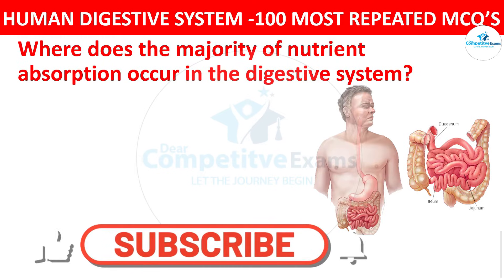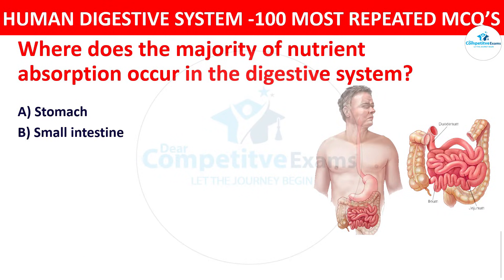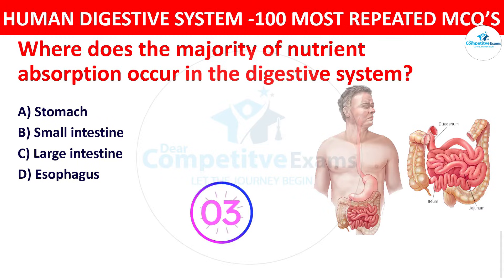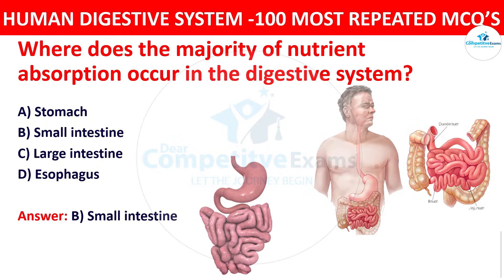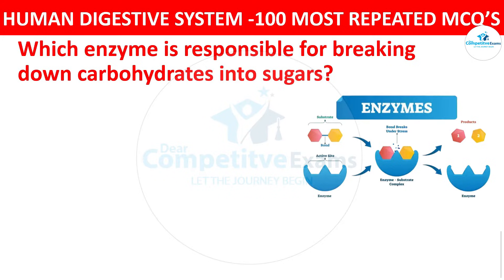Question number two: Where does the majority of nutrient absorption occur in the digestive system? The options are stomach, small intestine, large intestine, or esophagus. The right answer is small intestine. The small intestine is the primary site for the absorption of nutrients including carbohydrates, proteins, and fats.